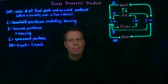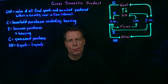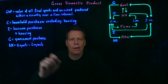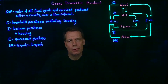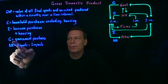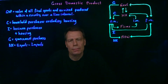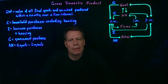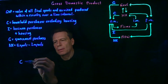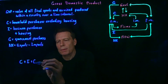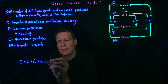Imports are goods we purchase from the rest of the world — they were not produced here, but they are purchased here by households, businesses, or the government. Since they weren't produced here, we don't want to include them in GDP. Since we've already counted them in the other categories, we have to subtract them back out. So we now have the four categories of GDP: consumption plus investment plus government purchases plus net exports.